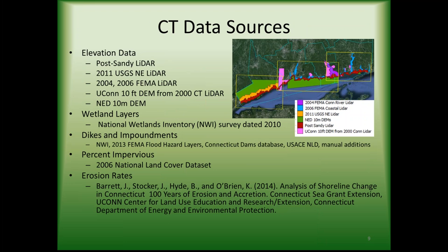For Connecticut data sources, we had bare-earth elevation data through post-Sandy LIDAR for the entire coastal fringe, plus additional LIDAR data sets covering inland areas. Wetland layers came exclusively from the National Wetland Inventory, and several dike and impoundment data sources were used. The impervious layer, giving us our developed dryland footprint, came from the National Land Cover dataset. We also had a very detailed data set for coastal erosion in Connecticut from a recent study by the Connecticut DEP.